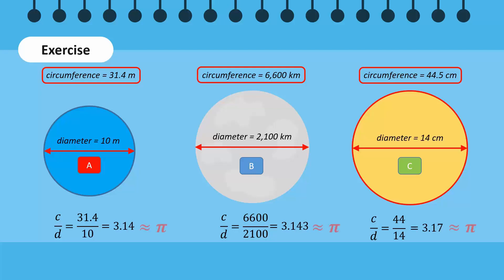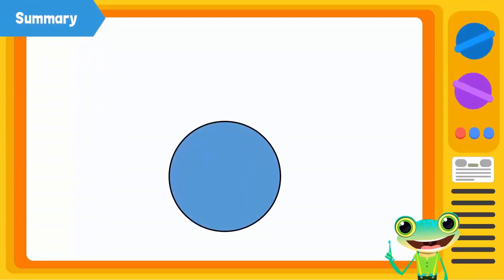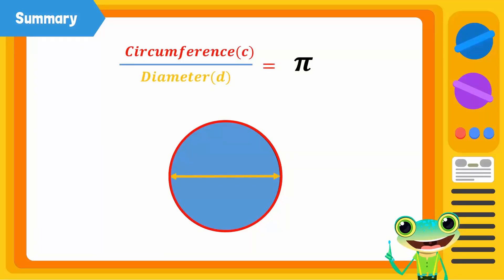Let's summarize. When we divide the circumference of a circle by its diameter, we get π. The ratio of the circumference to the diameter will always be equal to π for any circle, no matter what its size.